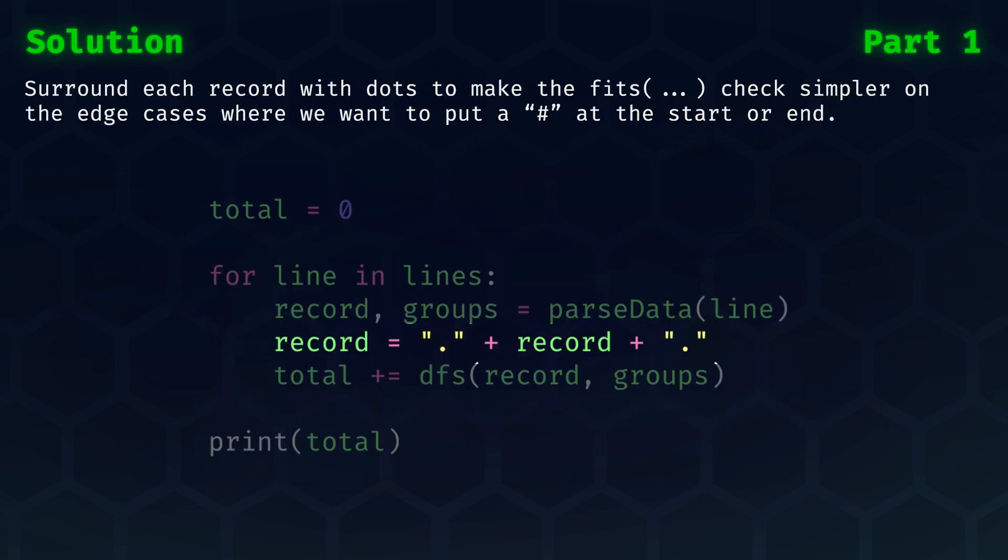The second check of our fits algorithm is the reason why we surround the record with dots. This removes any possible edge cases where we try to put the group on the edge of the record. In those cases, the edge would not have a dot as spacer for the group, meaning the check needs to become more complex. With dots at the edges, we're always golden. And that was part one.